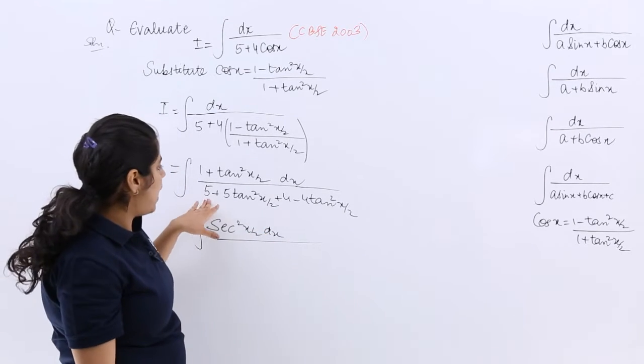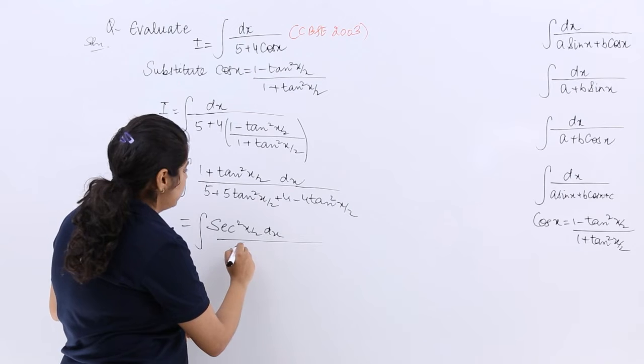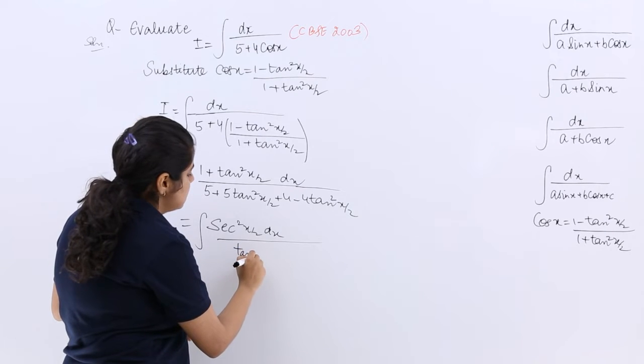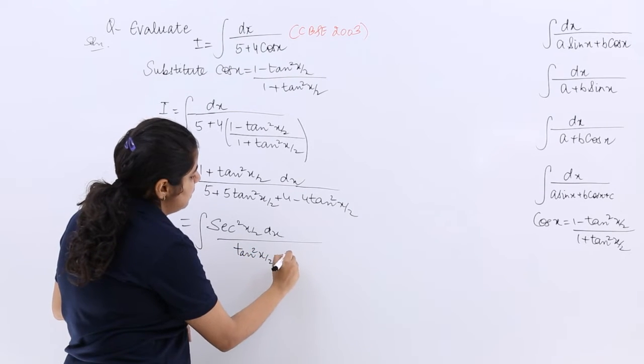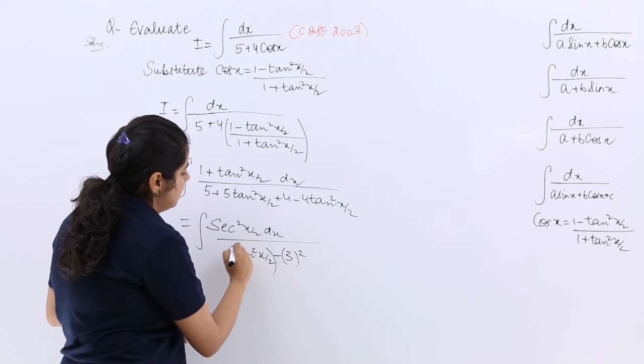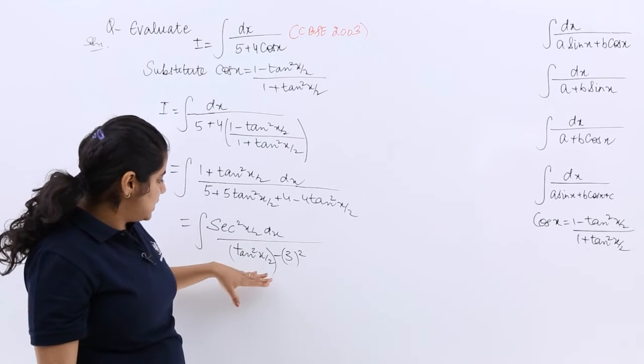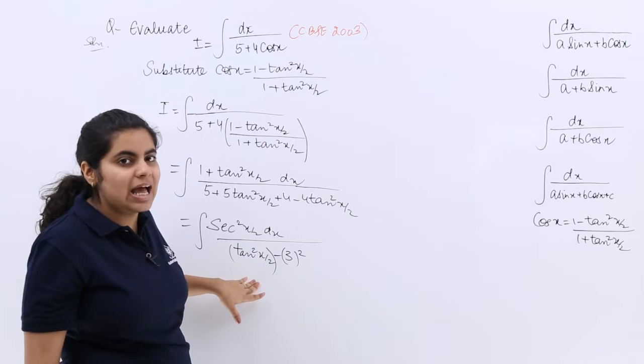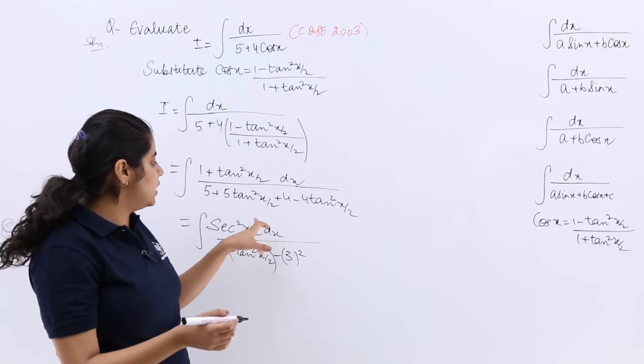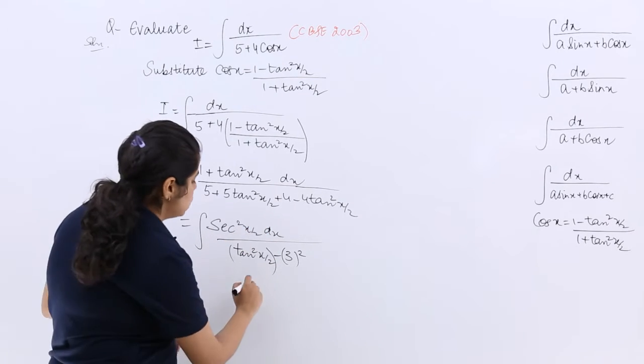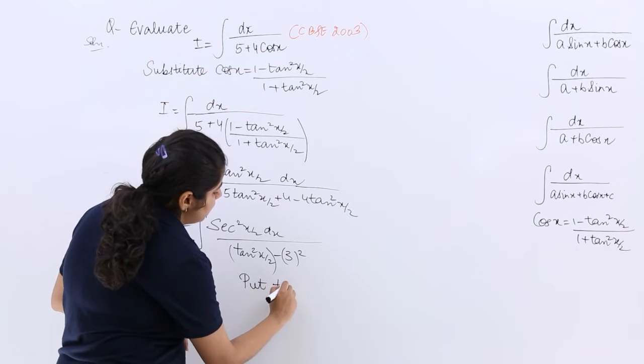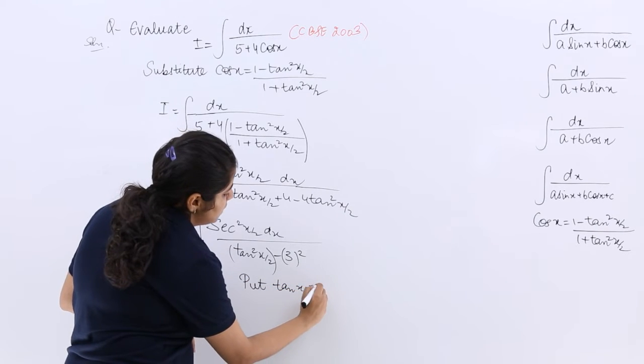The denominator: 5 and 4 make it 9, and it is tan²(x/2), so tan²(x/2) minus 9. Now, as you can see, if I put tan(x/2) as t, then its differentiation would relate to the numerator.